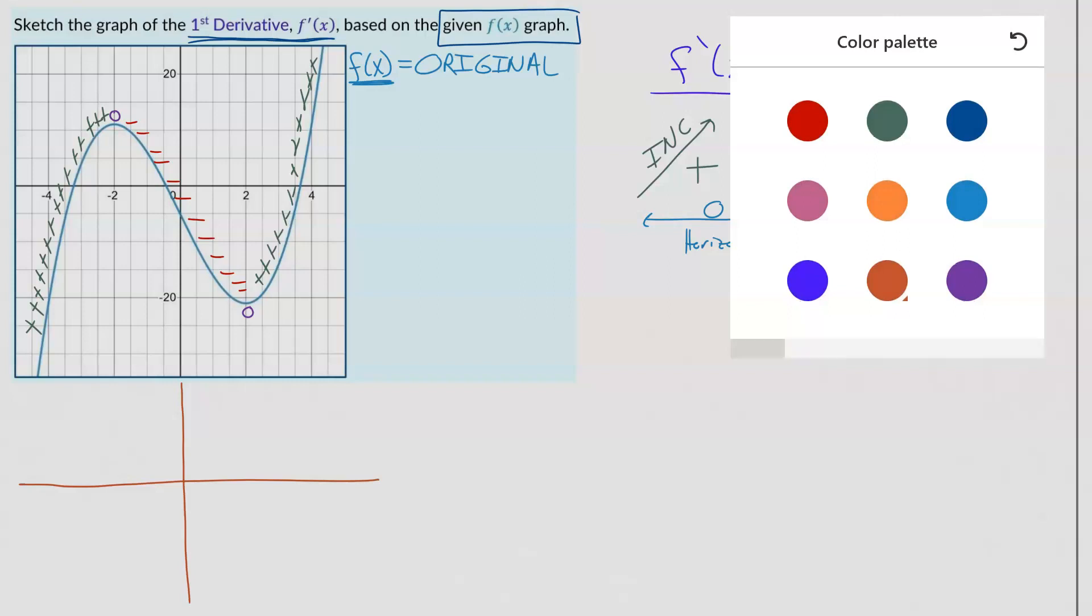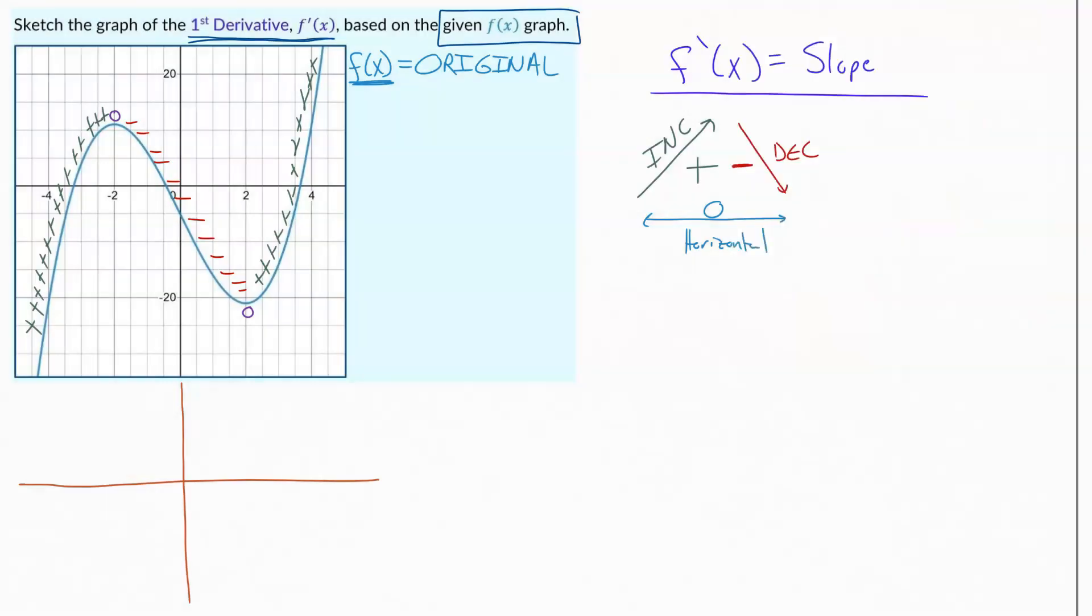The first thing that I do whenever I'm going to sketch the graph of the derivative is I look for these horizontal points. These are your critical values, another way that they refer to them.